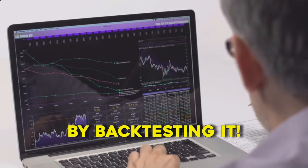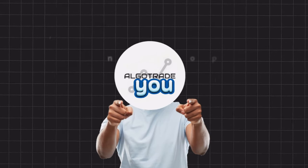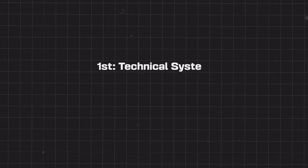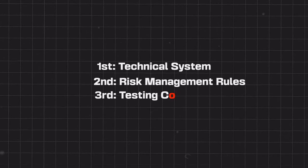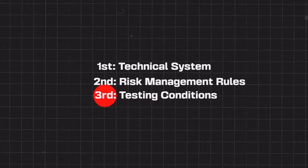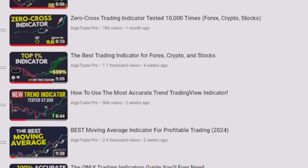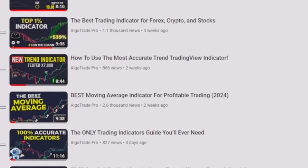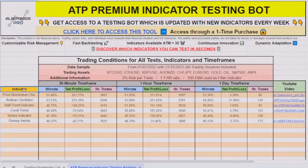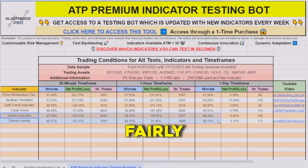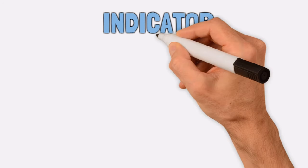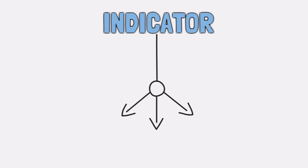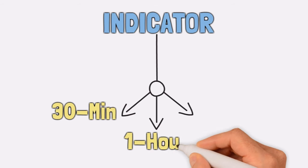Let's find out by backtesting it. To conduct a proper backtest, you need to have: first, the technical system; second, the risk management rules; and third, the testing conditions. I will backtest the Doda Stochastic in 3 different timeframes: the 30-minute, the 1-hour, and the daily one.